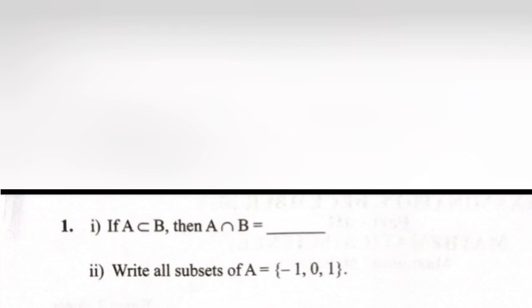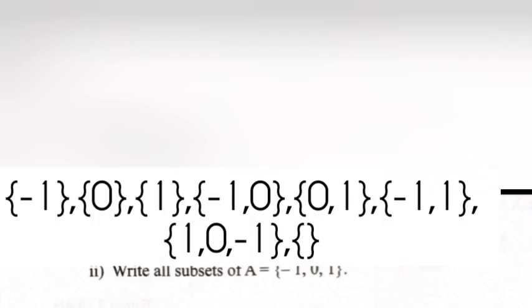Problem 2: Write all subsets of a equals {-1, 0, 1}. Answer: {-1}, {0}, {1}, {-1, 0}, {0, 1}, {-1, 1}, {1, 0, -1}, and the null set.